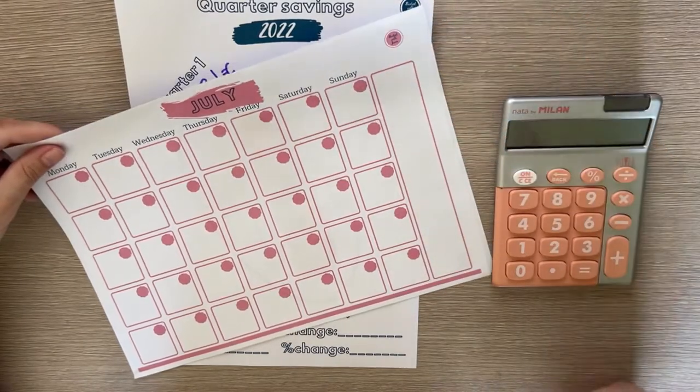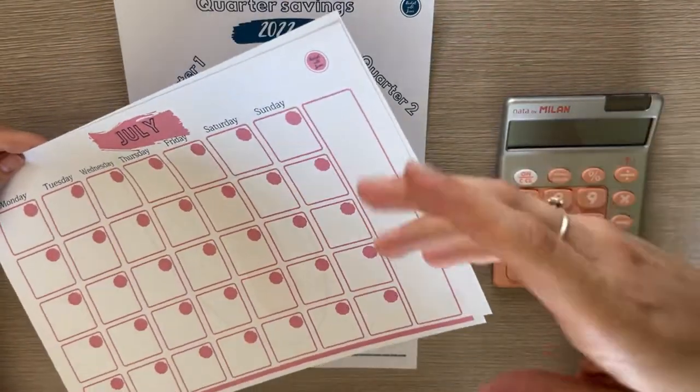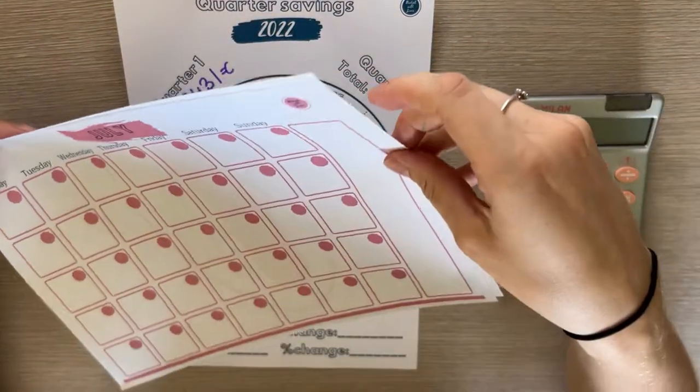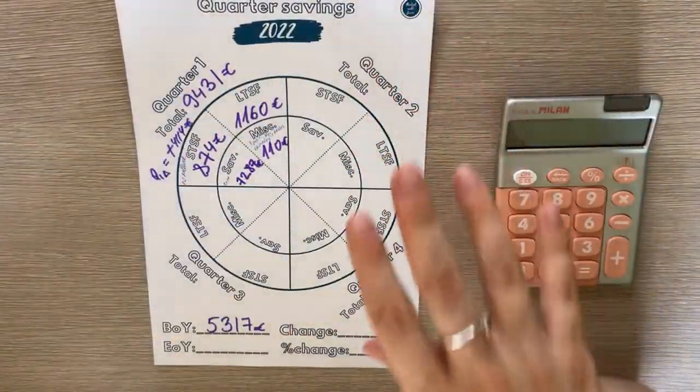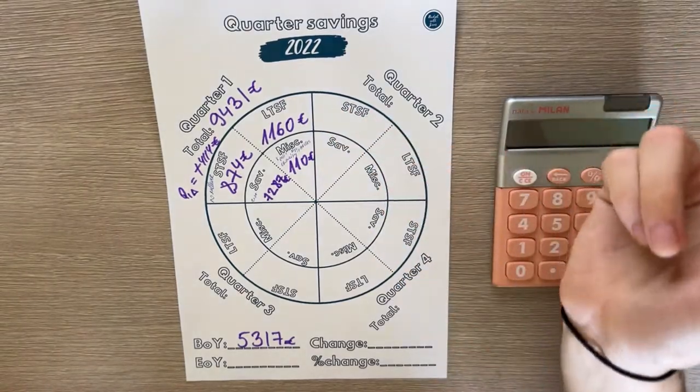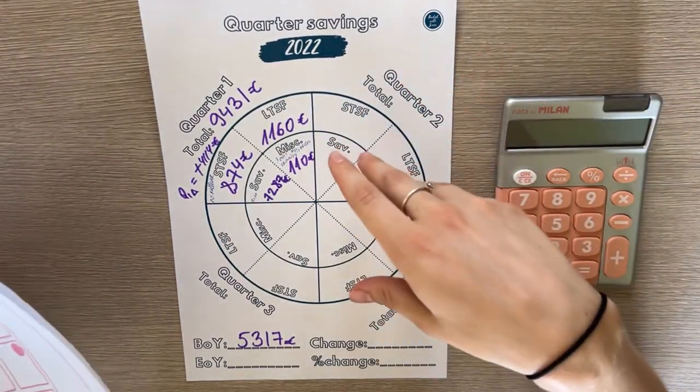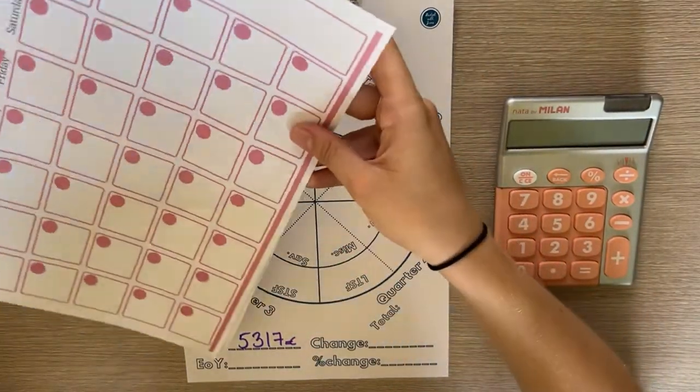I decided not to do it because I am still a budgeting channel, so why would I set up a calendar that has nothing to do with budgeting? I decided to just film this video to update the quarter savings because I realized June is the end of quarter two and I didn't film this video.